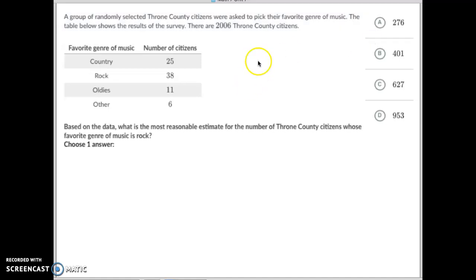First thing you want to do is take your overall population, the 2,006, divided by the sample size population. Well, wait, Mr. Anderson, where did you come up with 80? Here's how I did it. I took our sample answers and simply added them up. Since 25 like country, 38 like rock, 11 like the oldies, and 6 like something else, you add them all up and we know that there were 80 people in our sample.